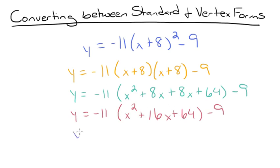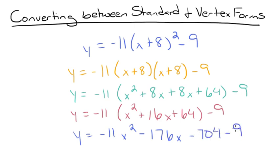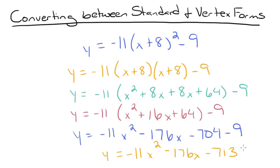Then we distribute the negative 11 to the trinomial and get y equals negative 11x squared minus 176x minus 704 minus 9. Finally we combine the last two like terms to get y equals negative 11x squared minus 176x minus 713. And there you have it! I hope this video on converting between standard and vertex forms of quadratic equations was helpful. Thanks for watching and happy studying!